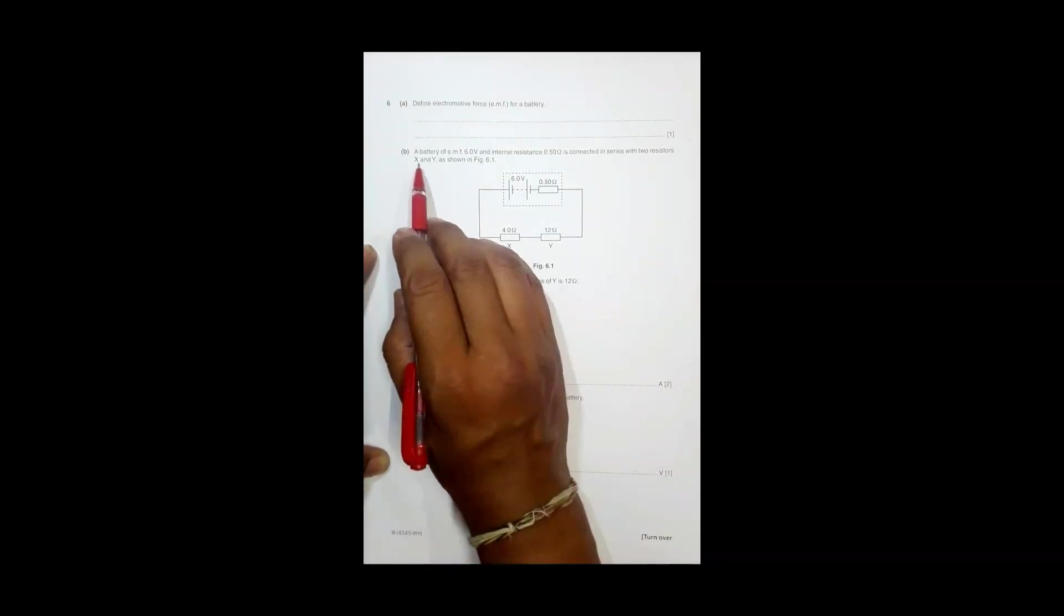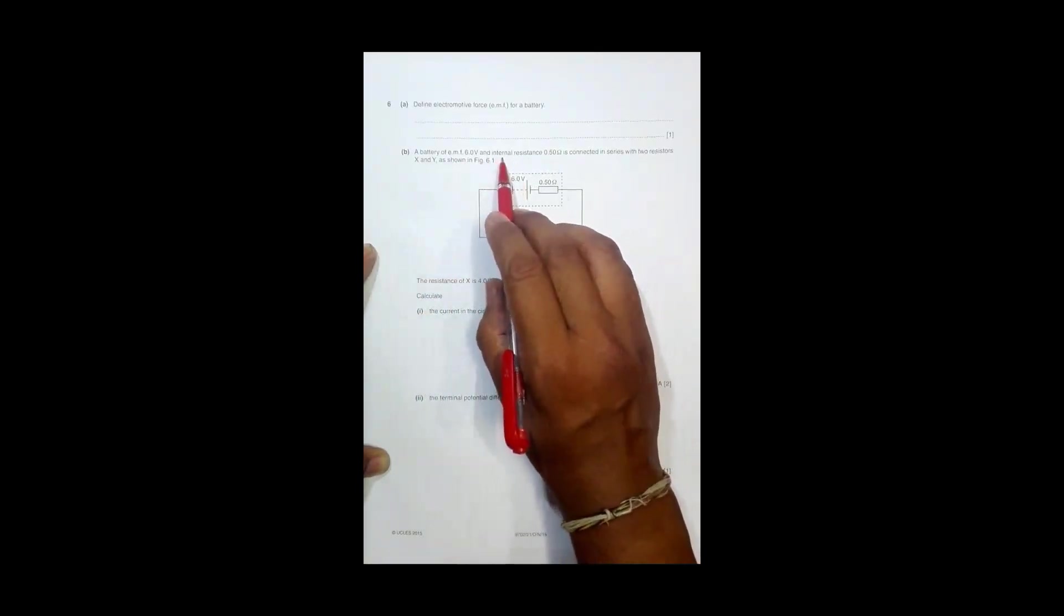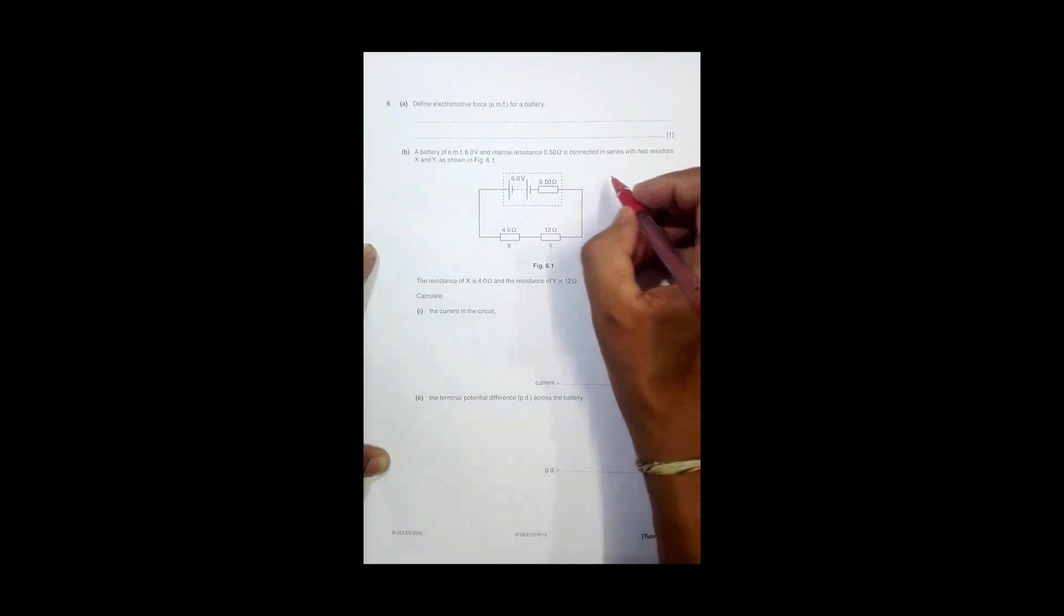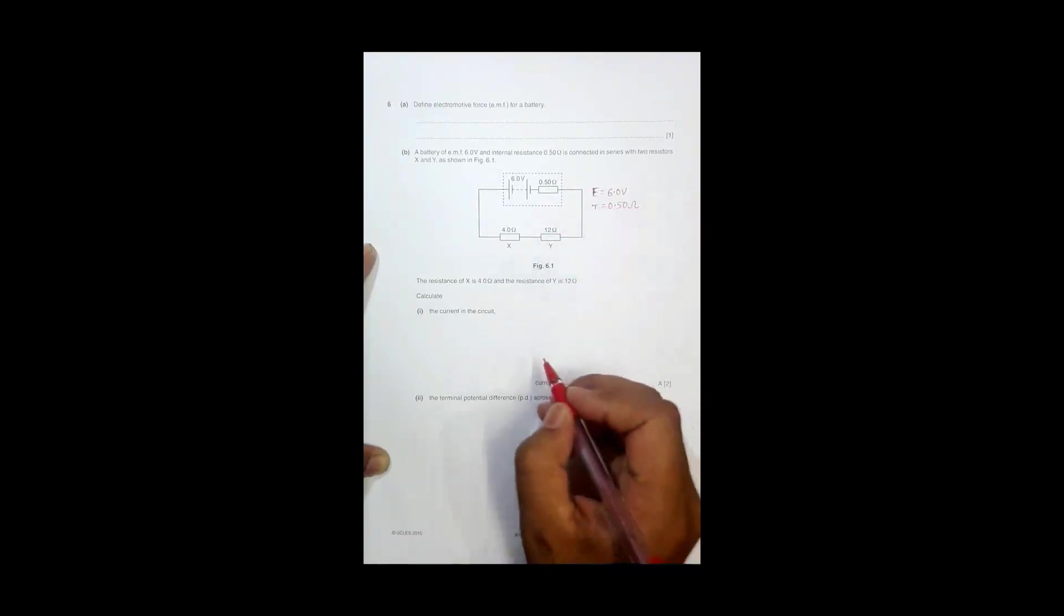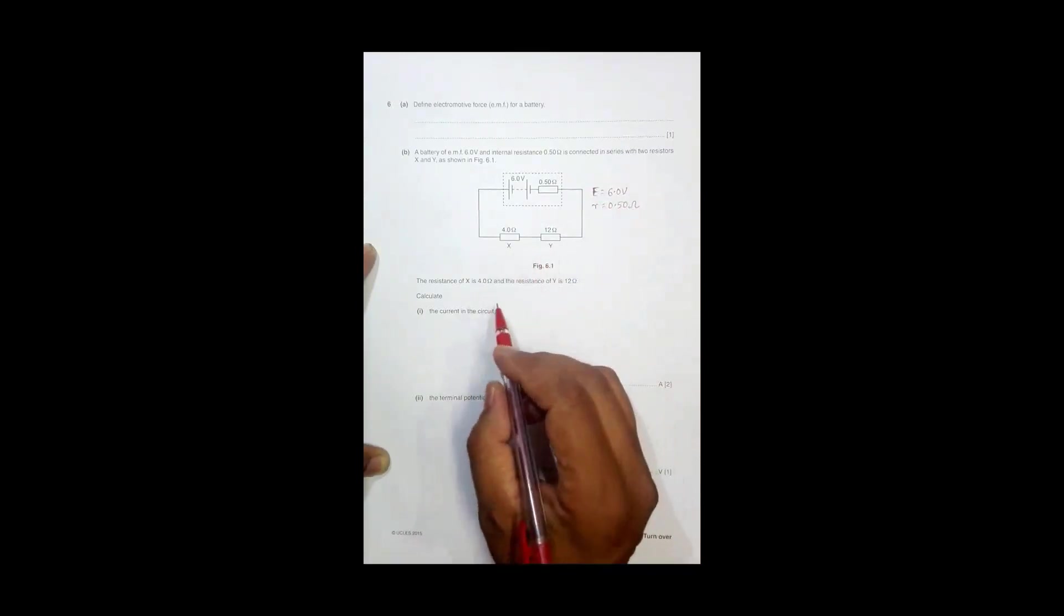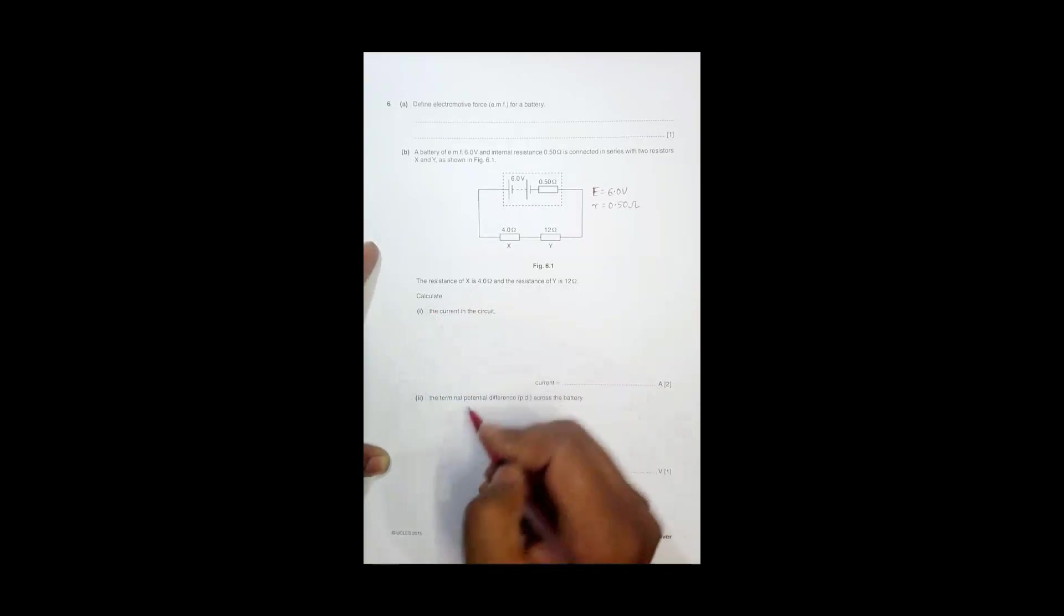It says that a battery of EMF 6.0 volt and internal resistance 0.50 ohm, so that means E is equal to 6.0 volt and this small r is equal to 0.50 ohm, is connected in series with two resistors X and Y. We have to calculate the current in the circuit and then the terminal potential difference PD across the battery.